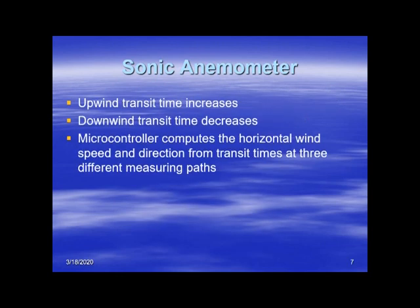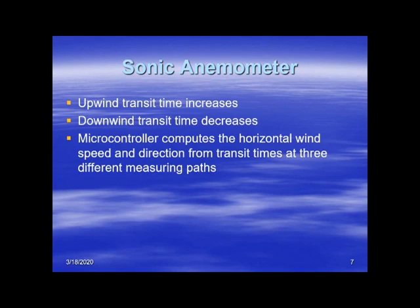The way a sonic anemometer works is that it sends a pulse — a sound wave — in one direction, which is received by a receiver, and then over the same path it sends a pulse back. If there is wind, it's going to take longer to get to the receiver in one direction than in the other. A microprocessor can figure out the wind speed based upon the transit times. Instead of just going back and forth along one path, they may use more than one path — typically three or four paths — to figure out the wind speed and wind direction.